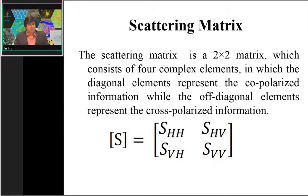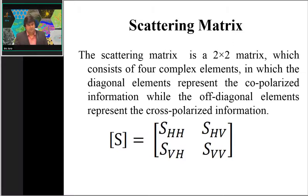With all four polarimetric channels, one can generate a scattering matrix — a 2×2 matrix. This scattering matrix plays a very important role in SAR polarimetry, as it enables polarimetry and polarimetric interferometry (PolInSAR). The matrix is created from the different polarimetric combinations (HH, HV, VH, VV) acquired at the same time period for the same area.